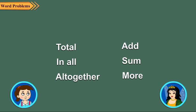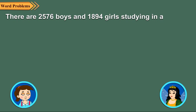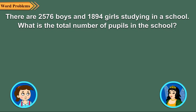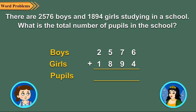Let us take some examples to get the concept more clearly. There are 2,576 boys and 1,894 girls studying in a school. What is the total number of pupils in the school? Neha, you can see in this example, we have to add 2,576 boys and 1,894 girls because here they are asking total number of pupils in the school. So, we find the total number of pupils are 4,470.